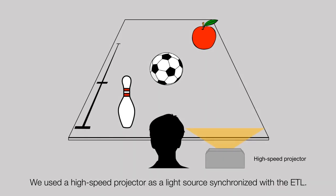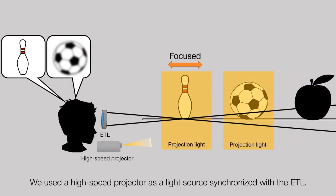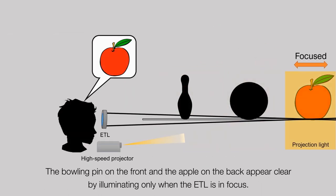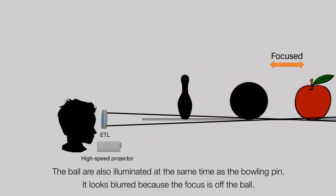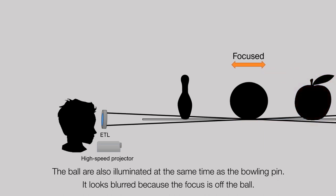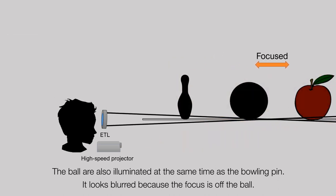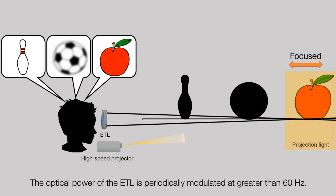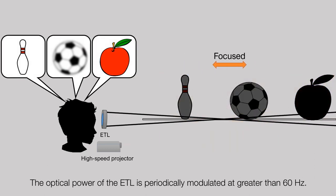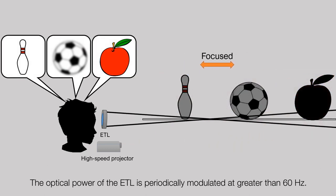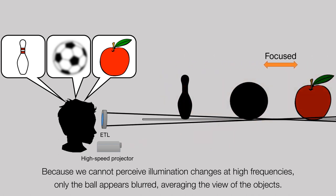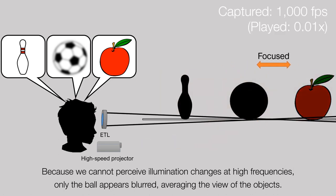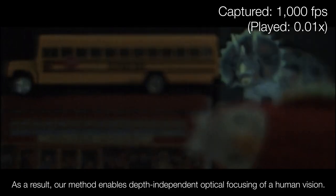We used a high-speed projector as a light source synchronized with the ETL. The bowling pin on the front and the apple on the back appear clear by illuminating only when the ETL is in focus. The ball is also illuminated at the same time as the bowling pin, but looks blurred because the focus is off the ball. The optical power of the ETL is periodically modulated at greater than 60 Hz. Because we cannot perceive illumination changes at high frequencies, only the ball appears blurred, averaging the view of the objects. As a result, our method enables depth-independent optical focusing of human vision.